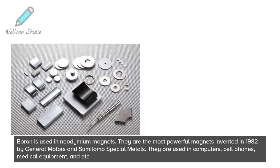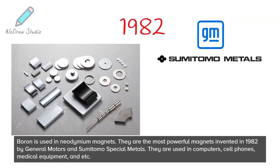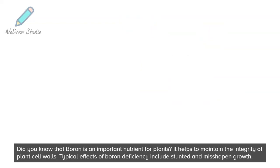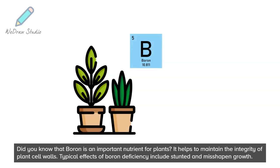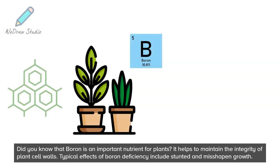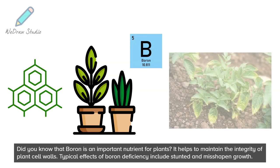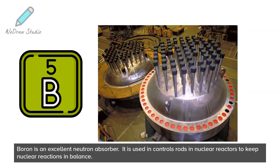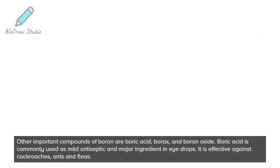Boron is used in neodymium magnets — the most powerful magnets, invented in 1982 by General Motors and Sumitomo Special Metals. They are used in computers, cell phones, medical equipment, and more. Boron is also an important nutrient for plants, helping to maintain the integrity of plant cell walls; deficiency causes stunted and misshapen growth. Additionally, boron is an excellent neutron absorber, used in control rods in nuclear reactors to keep nuclear reactions in balance.